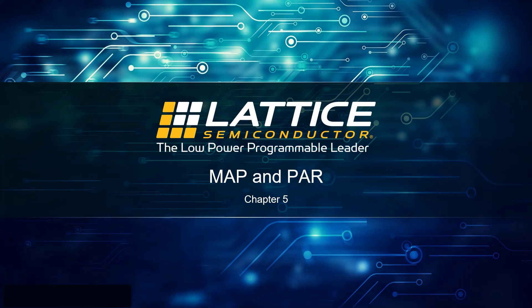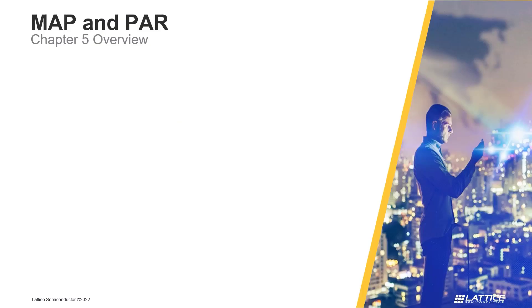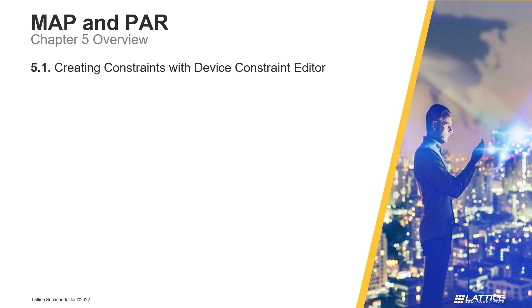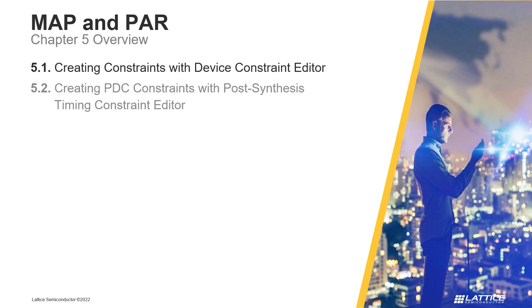In this section of the Radiant introductory training series, we will discuss post-synthesis constraints and post-place and route implementation checks for Radiant projects. Chapter 5 consists of seven sections. In the first section, Creating Constraints with Device Constraint Editor, we will introduce Radiant's Device Constraint Editor and how it can be used to create physical constraints for a project's device. In section 2, Creating PTC Constraints with Post-Synthesis Timing Constraint Editor, Radiant's Post-Synthesis Timing Constraint Editor is introduced and how it can be used to create timing constraints after synthesis.